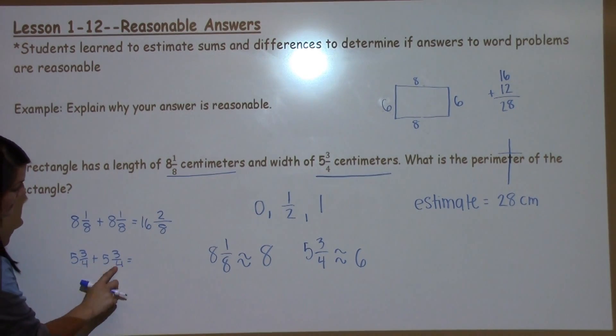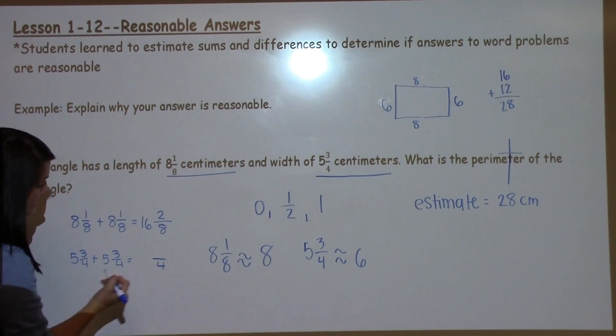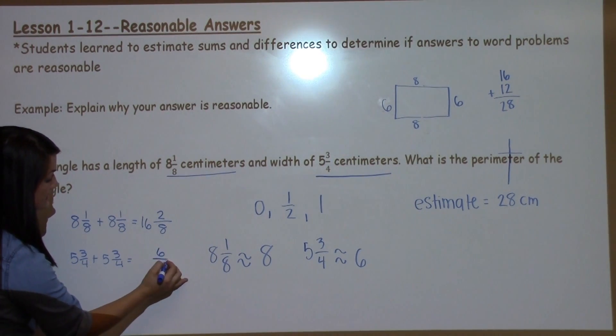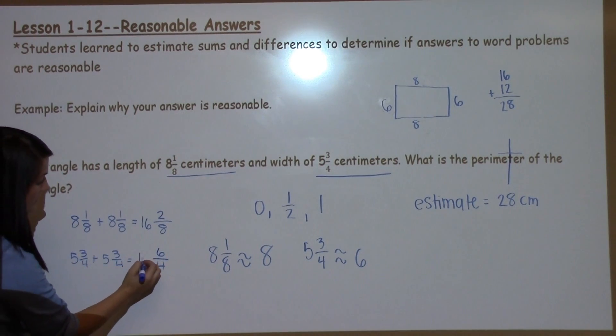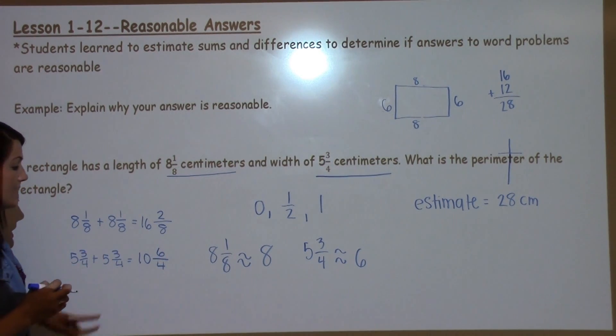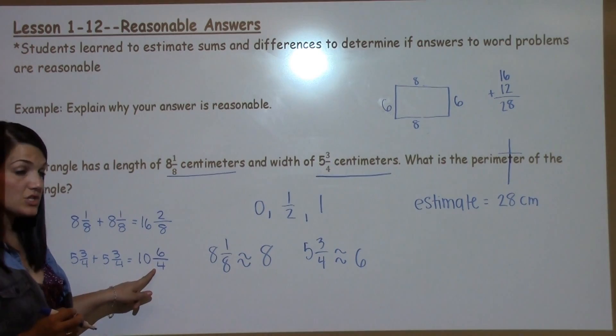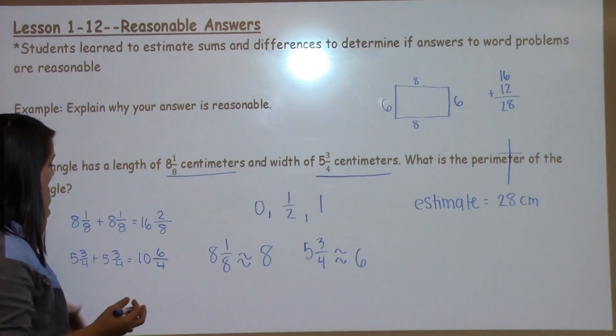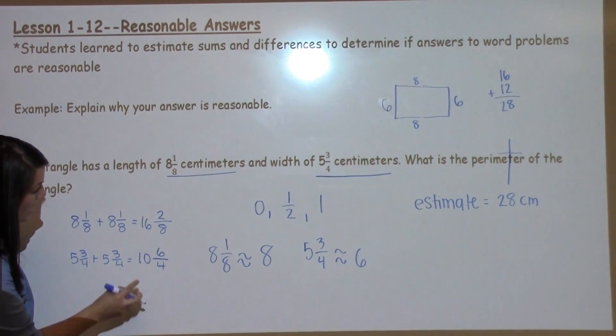Again, my denominators down here are the same, so that makes it easy. They get to stay the same. 3 plus 3 is 6, 5 plus 5 is 10. Now I'm working with an improper fraction on this sum, but I'm going to leave it improper until the very end because it might become more improper as we go along.